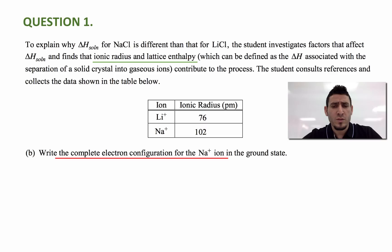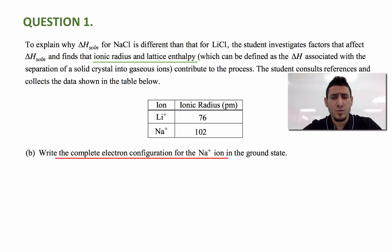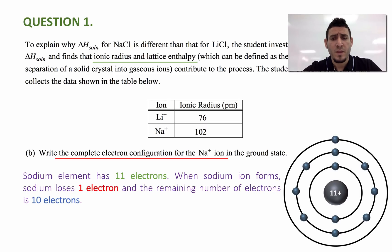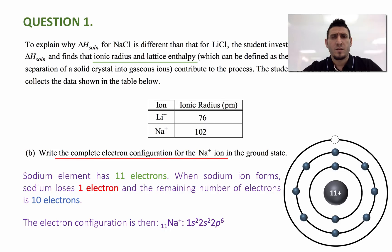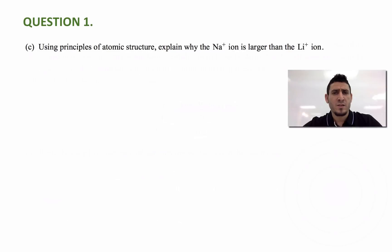It's important to remember that sodium has 11 electrons. When the sodium ion forms, sodium will lose one electron and the remaining number of electrons is 10. Therefore, the electron configuration is 1s², 2s², 2p⁶, which accounts for only 10 electrons.